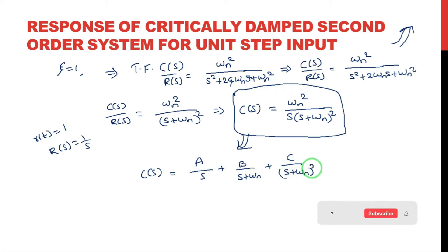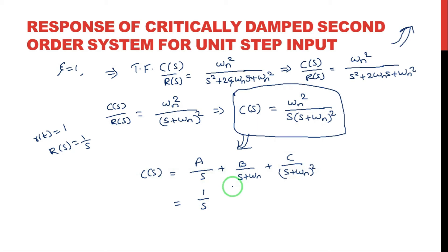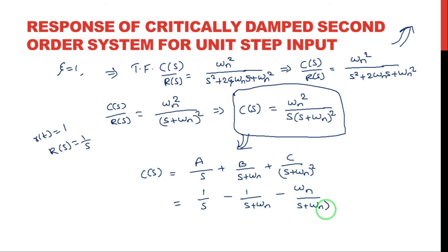After taking the partial fractions, the values are: A equals 1, B equals minus 1, and C equals minus omega_n. You can verify these partial fraction values by checking the previous video.